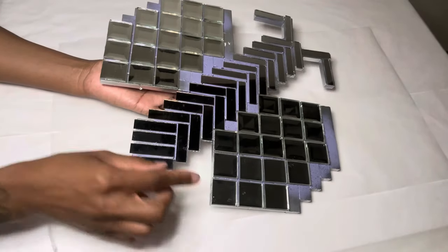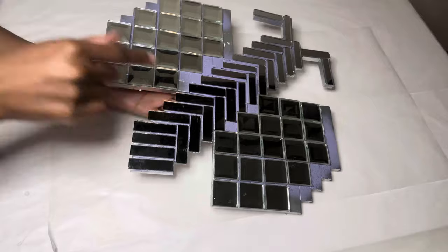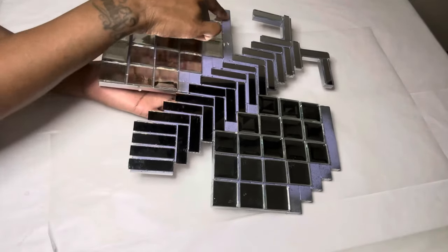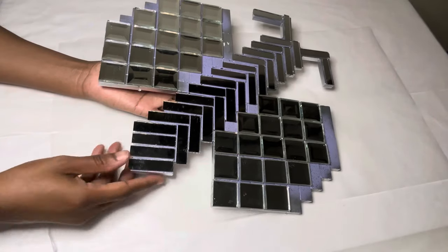After I got done gluing all my mirror tiles down, I noticed that the wings didn't quite match up. The left inner wing is supposed to be on the outer part, but that's okay because I'm still making it work.